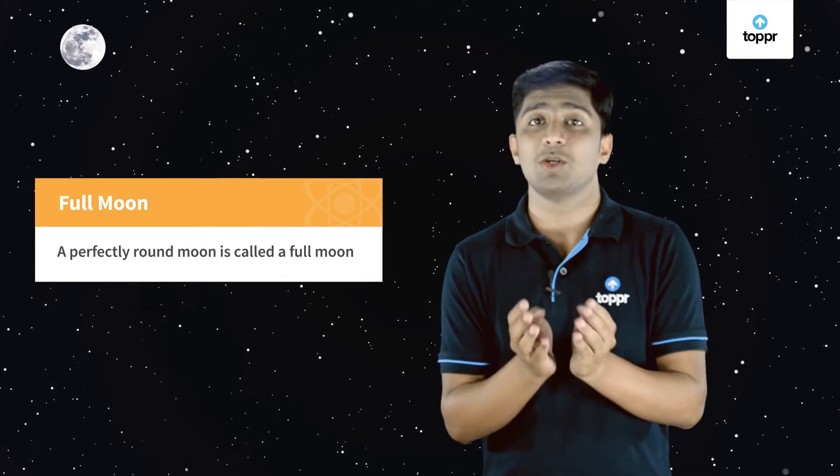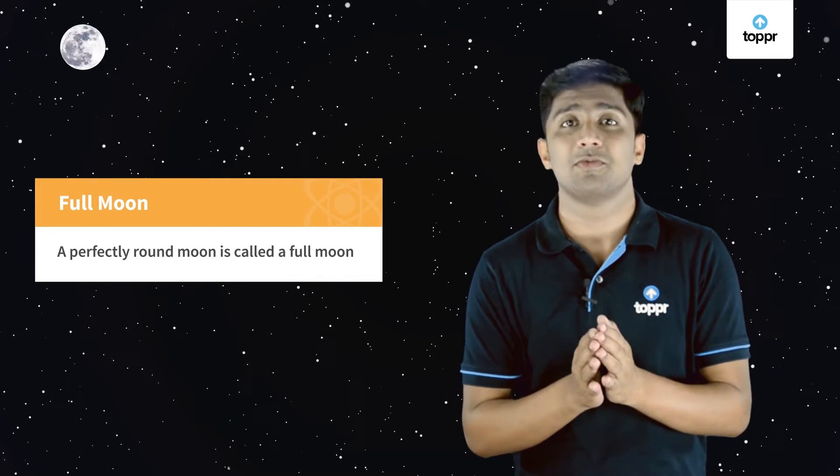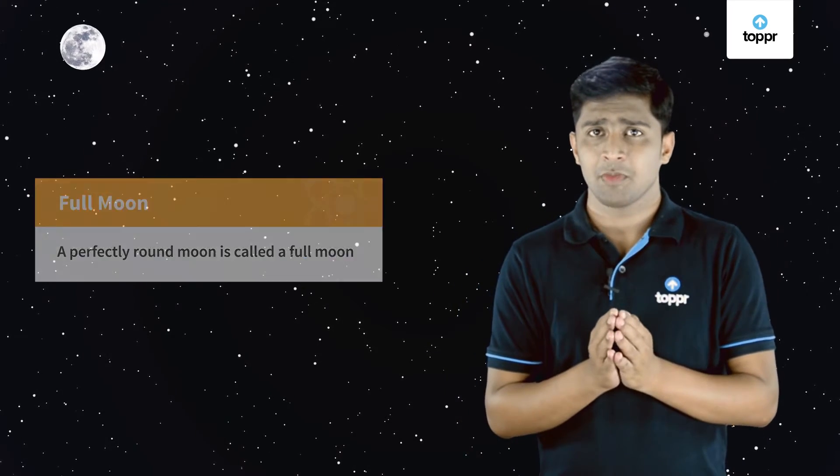The sky looks lovely tonight. The stars are shining brightly and the moon is perfectly round. You know what? A perfectly round moon is called a full moon. But even you might have noticed, some days in the sky there is no moon at all, even if the sky looks very clear. But why does that happen? Why is the moon playing hide and seek with us?